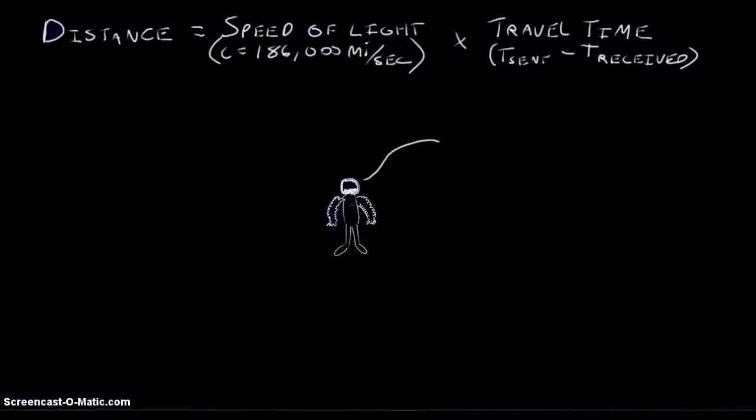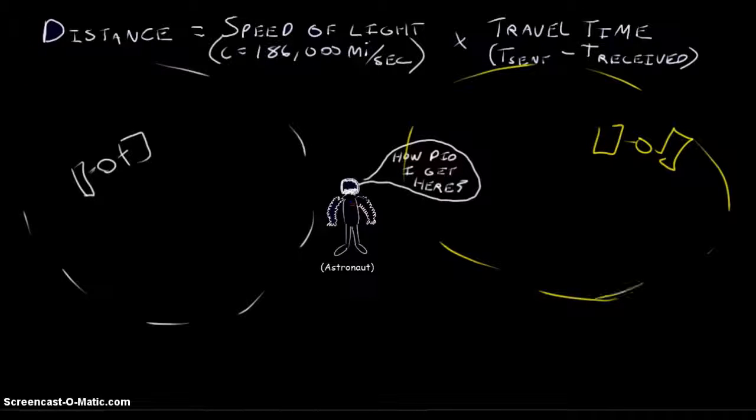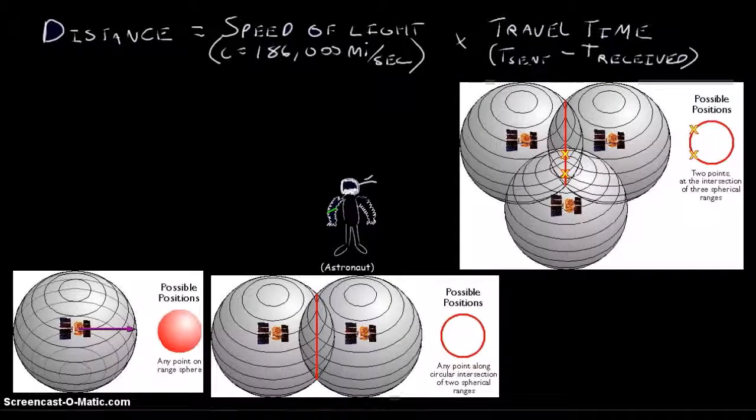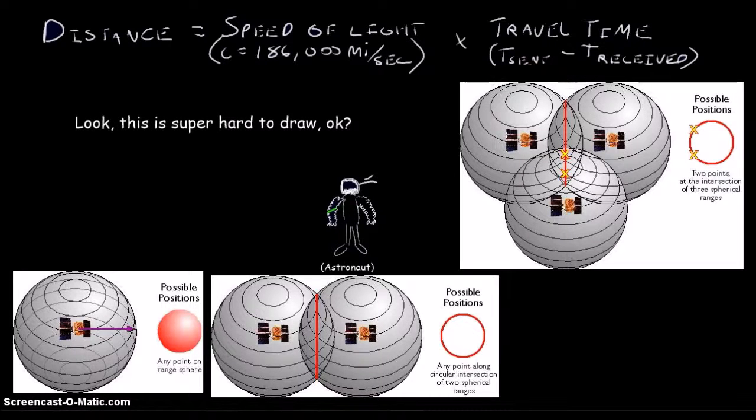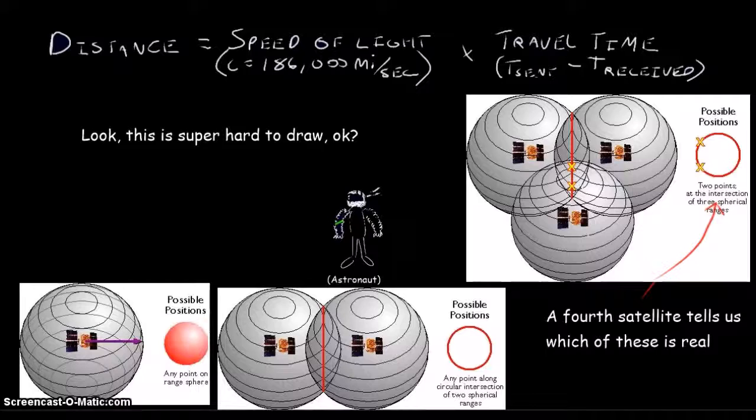That single distance is going to tell us our location on a sphere surrounding the satellite. Adding another satellite will give us a position somewhere on the intersect between these two satellites. A third gives us two possible points, only one of which is reasonable, as the second is not near the surface of the Earth. A fourth gives us a three-dimensional fix, and lets us solve for the clock error in our receiver, saving us the trouble of building atomic clocks into our smartphones.